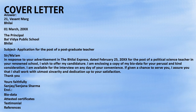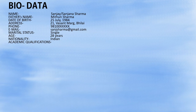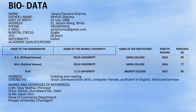Then frame the bio data. Provide personal information first: name, father's name — which is not mentioned in the question so you create it — date of birth, address, contact number, email, marital status, age, and nationality. Then academic qualifications in tabular form. Followed by hobbies, strengths, and two references.